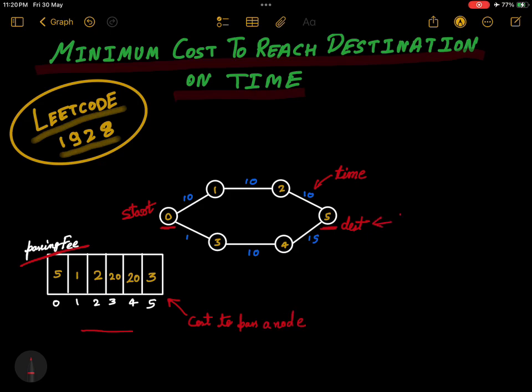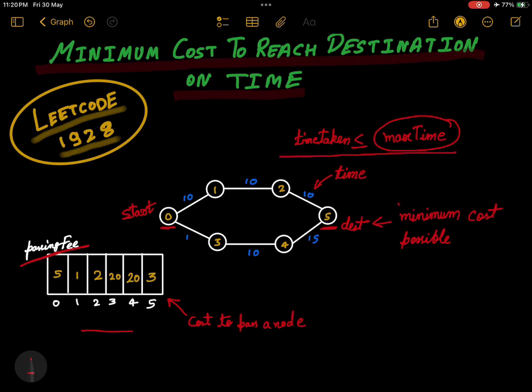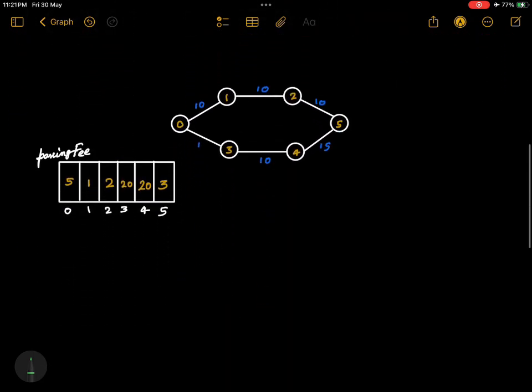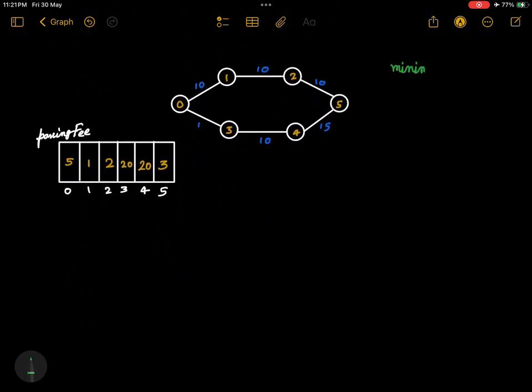The question is we have to reach the destination from the starting point in minimum cost possible, and we also have a max time constraint. The total time which we take in our traversal should be less than or equal to max time. So we have these two conditions: minimum possible cost, and time should be less than or equal to max time while traversing.